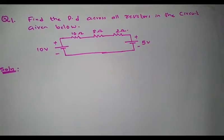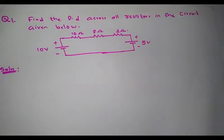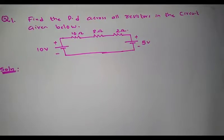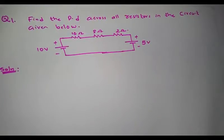Let's go through one simple numerical example. The question is: find the potential difference across all resistors in the circuit given below. We have a simple electrical circuit consisting of two voltage sources — 10 volt and 5 volt — connected as shown, and three resistors: 10 ohm, 8 ohm, and 2 ohm. All of them are connected together to form a closed loop.